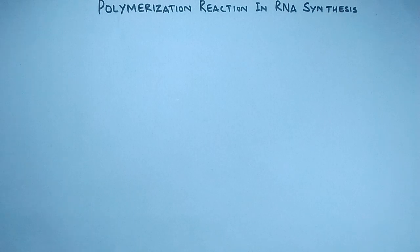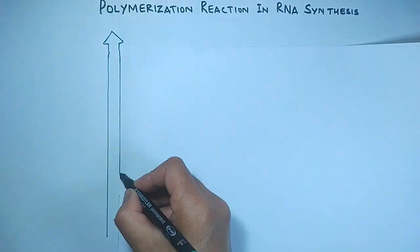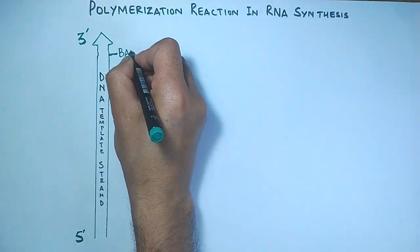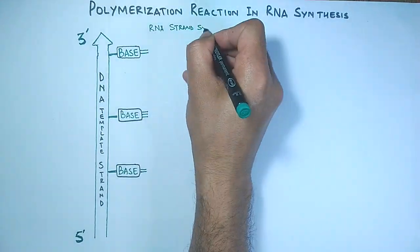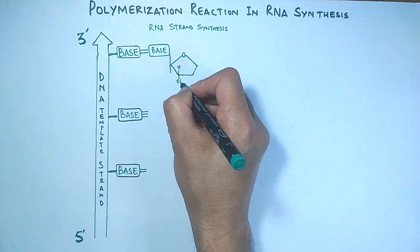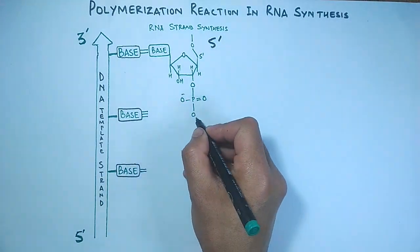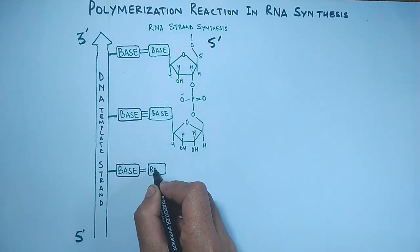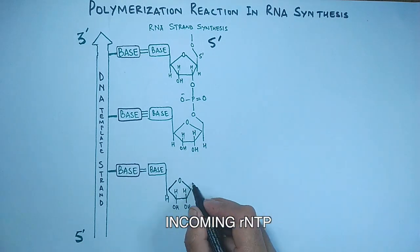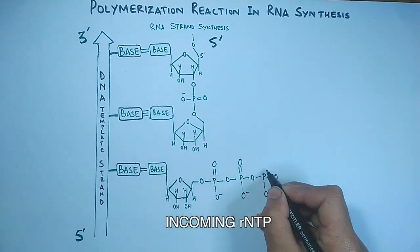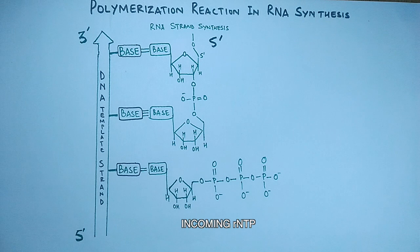Now let's get directly to the polymerization reaction. We see we have a DNA template strand in three prime to five prime direction as shown in the diagram. On the right, RNA synthesis takes place where we get the bonding of nucleotides through phosphodiester bonds as shown in the diagram. Here is the incoming nucleotide triphosphate.